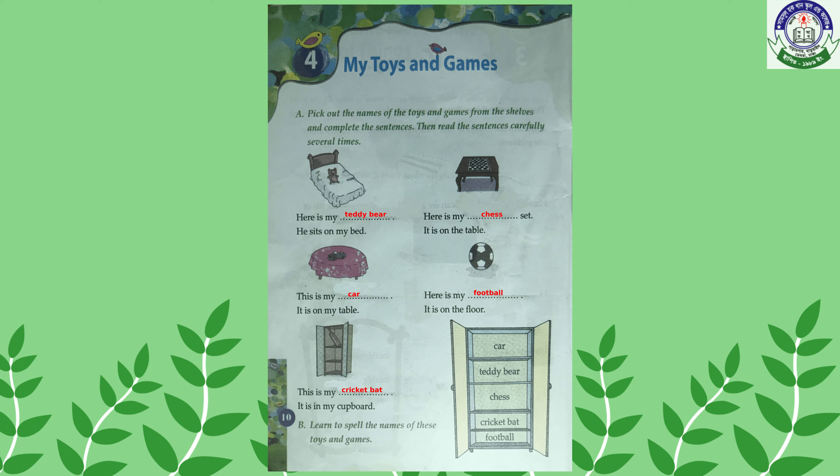You have to pick the words from the shelves. Here is my teddy, and it sits on my bed. Then the next one — here is my chess set; it is on the table. Then the next one — this is my car; it is on my table.